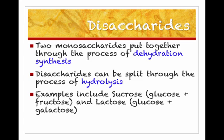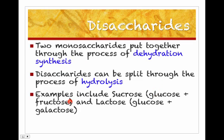The disaccharides you need to know about are sucrose, which is table sugar. Sucrose is made by combining a glucose and a fructose — those are the monosaccharides. So when you bond a glucose and a fructose together, you get table sugar, sucrose.